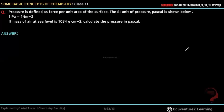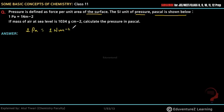Hello everyone. Pressure is defined as force per unit area of the surface. The SI unit of pressure is Pascal. 1 Pascal is equal to 1 Newton per meter square. If the mass of air at sea level is 1034 gram per centimeter square, calculate the pressure in Pascal.